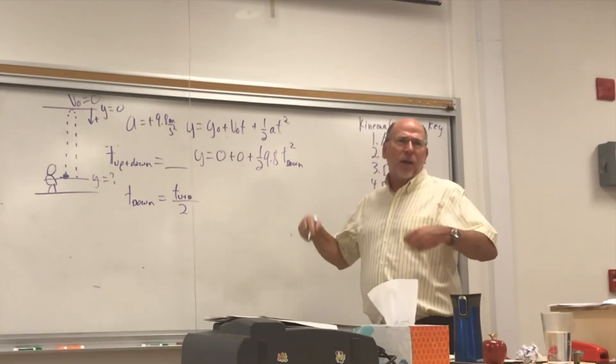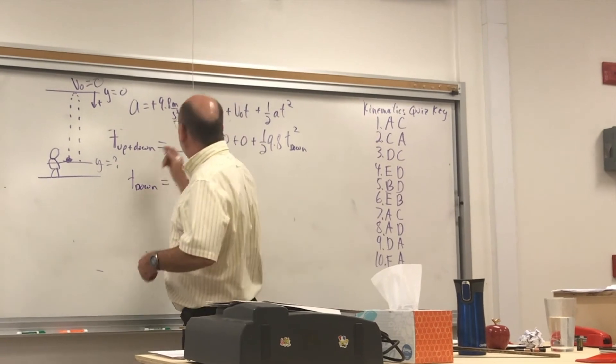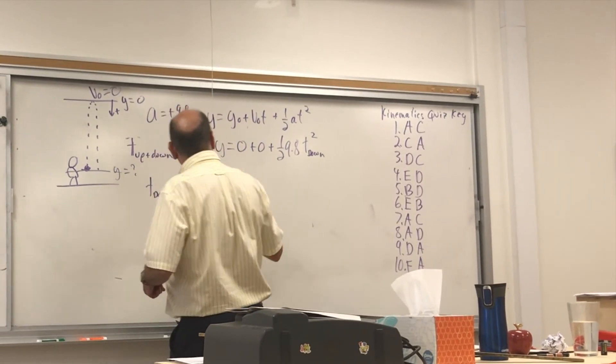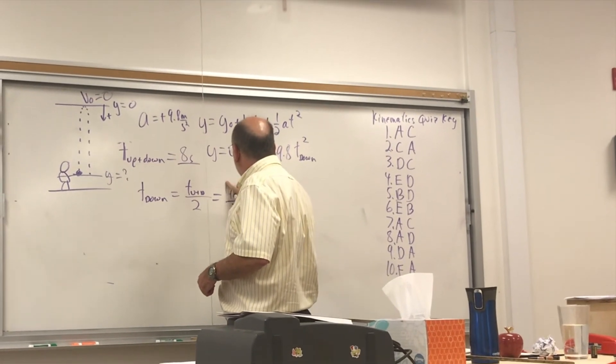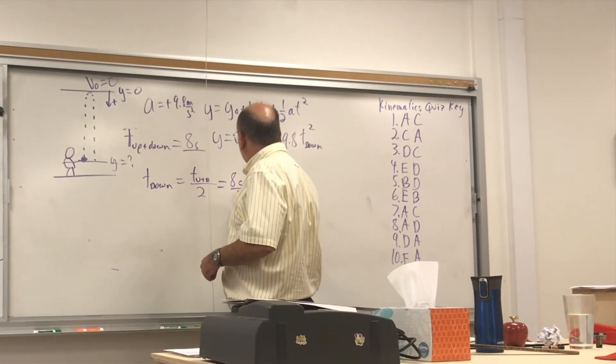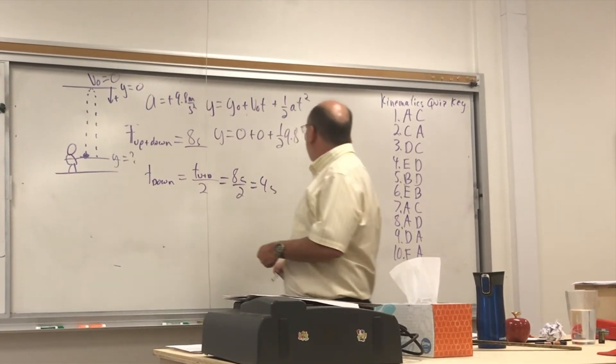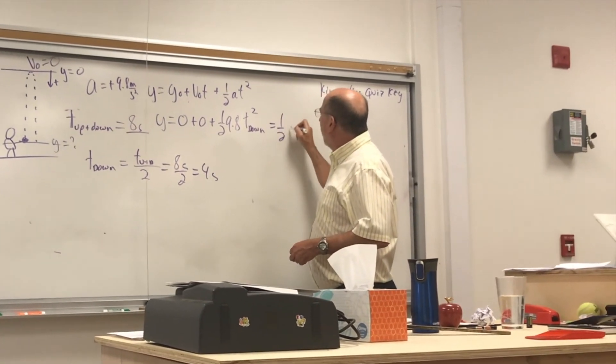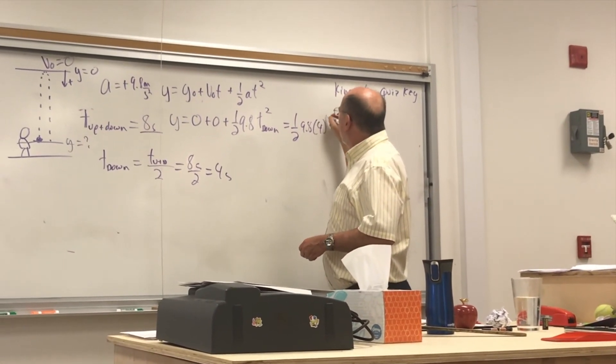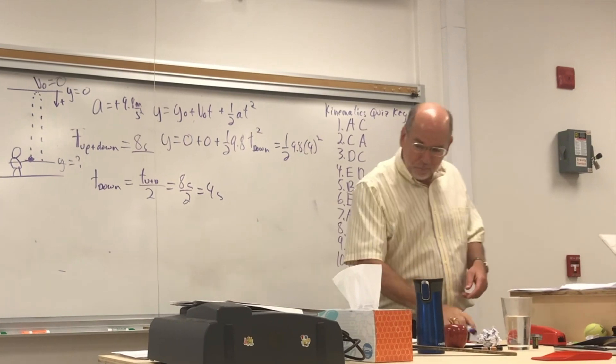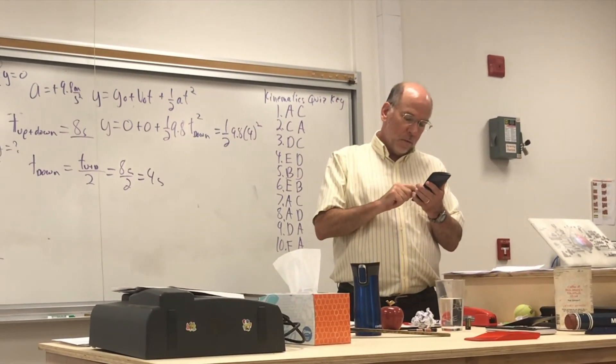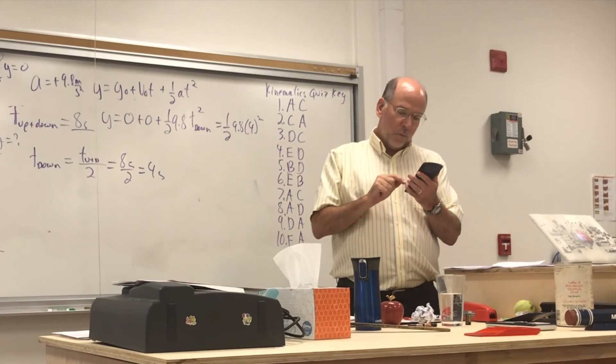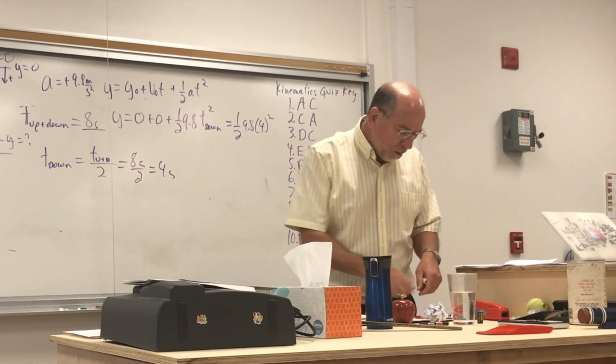So let's just say 8 seconds. 8 seconds. So that makes it pretty easy. 8 seconds over 2. 4 seconds. One half. 9.8. That's 4 squared. So that's pretty easy. So 78.4 meters.